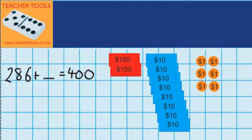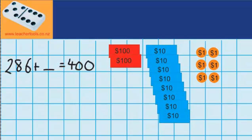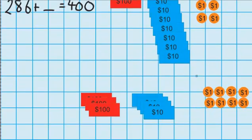I'm imagining I'm saving for something worth $400 and I've got $286 in my wallet and I'm going to need some more out of my bank account. You can see over here I've got my 286 — 2 hundreds, 8 tens and 6 ones. And down here I've got all the money which is in my bank account.